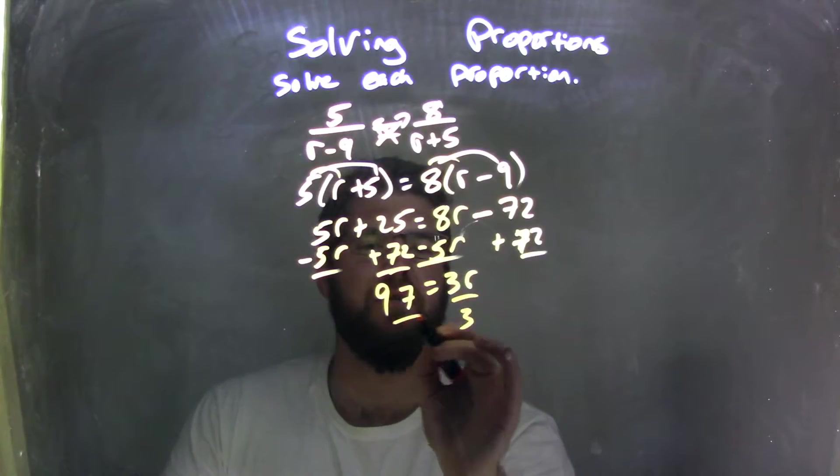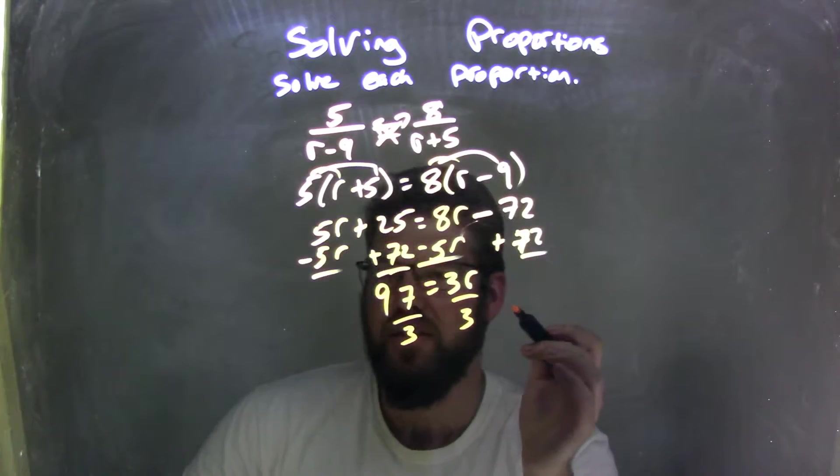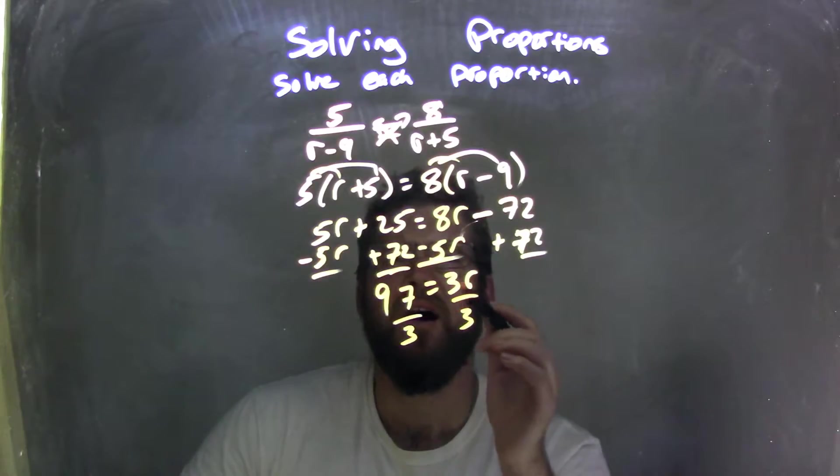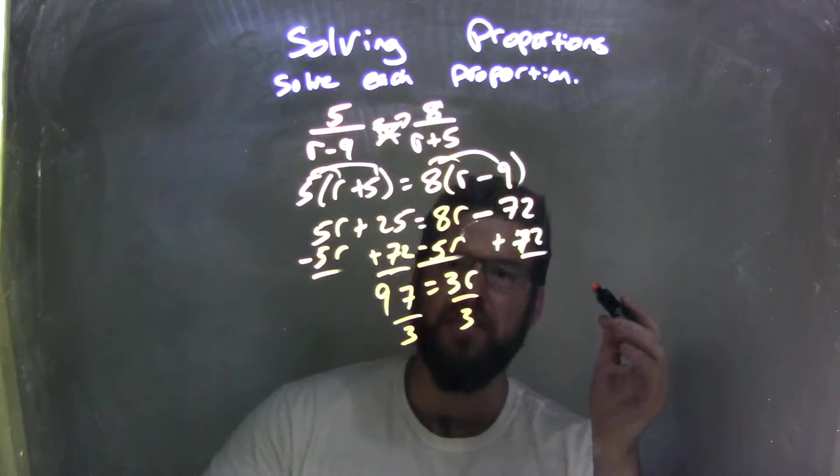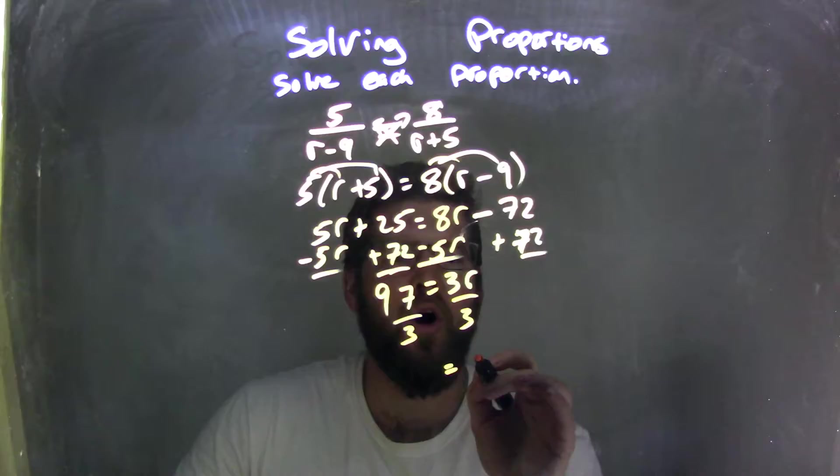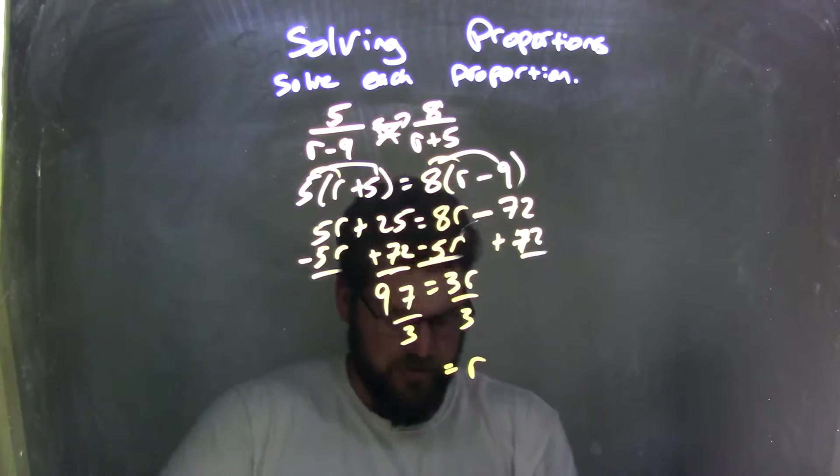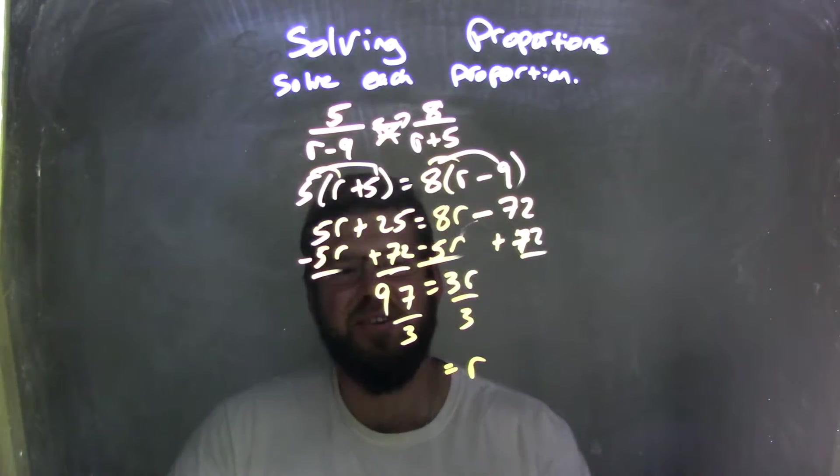I'm going to divide by 3 on both sides. You'll see if this goes into it. Yes, I did. Okay, so now we have r by itself on the right, and what's 97 divided by 3? That does not, in fact, go in evenly.